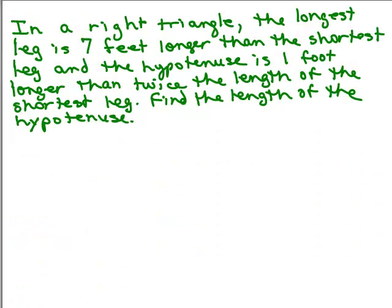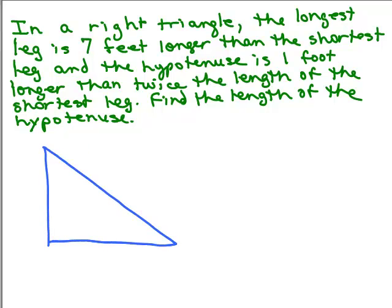We don't know the lengths of any of the sides of the triangle, but we do know it's a right triangle. So a good start is to draw a picture of a right triangle. We know that one leg is smaller than the other. Let's call the short side x. The longest leg is seven feet longer, and the two legs are the sides next to the right angle. So if the short leg is x, then this will be x plus 7.